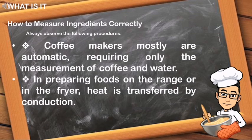Coffee makers are mostly automatic, requiring only the measurement of coffee and water. In preparing foods on the range or in the fryer, heat is transferred by conduction.